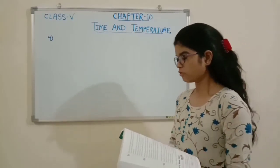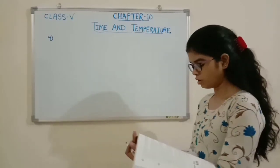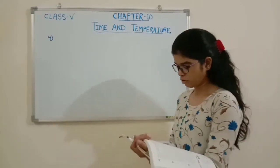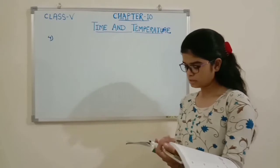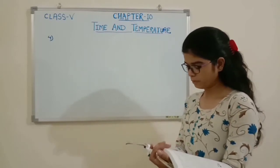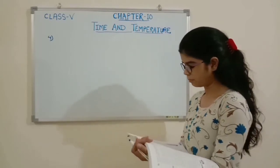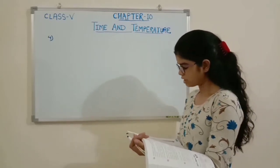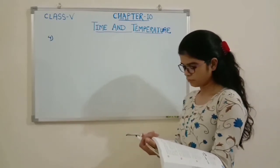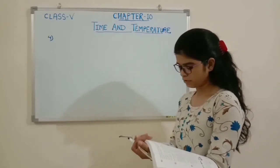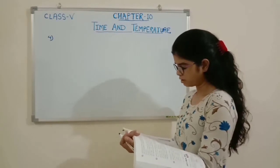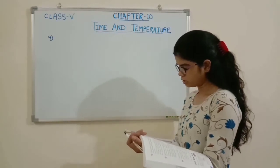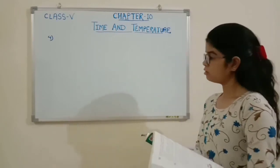Our next question is Question number 4: Jaya paused a TV program from 6:45 PM to 8:15 PM. 17 minutes were used up in viewing advertisements. What was the duration of the TV program?